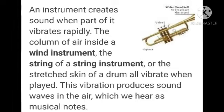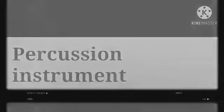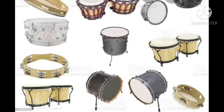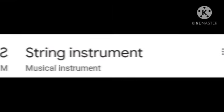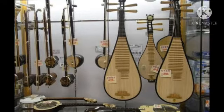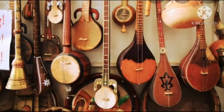Let us discuss different types of instruments. The first type is percussion instruments — they have a stretched membrane that vibrates to produce sound. String instruments such as violin and guitar, which you may have seen in your school, also produce sound through vibration of their strings.